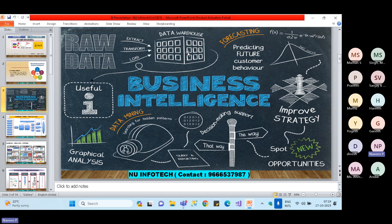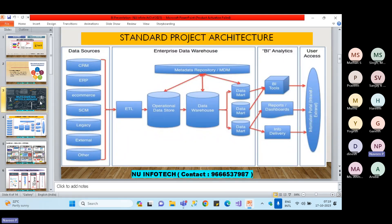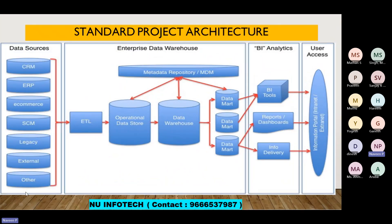The standard flow within BI projects is: data from the data warehouse system feeds into report creation. Looking at the full project architecture, the source systems in any company can be multiple — different systems for different business lines, maintained in different locations and databases.